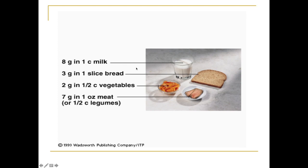This picture shows the relative amount of protein in various foods. In one cup of milk there's about eight grams of protein, three grams in one slice of whole wheat bread, two grams in a half cup of vegetables, or seven grams in one ounce of meat — which is equivalent to a half cup of legumes such as beans and peas.